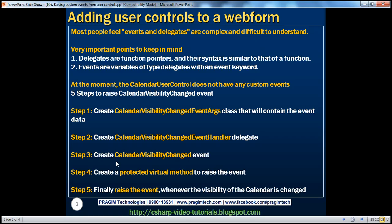There are five simple steps to raise a custom event from a control. The first step is to create the CalendarVisibilityChangedEventArgs class — for short, we are calling it event args. This class is going to contain the event data. This may not be very clear at the moment, but as we progress in this video you're going to understand the purpose of this class. We'll also understand the reason for this naming convention.